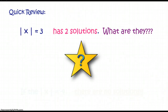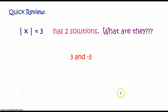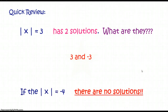A quick review: the absolute value of X equals 3 has two solutions — can you name them? Your two solutions would be 3 and negative 3, because each one is 3 spaces from 0. And if we have the absolute value of X equaling a negative number, there are no solutions.